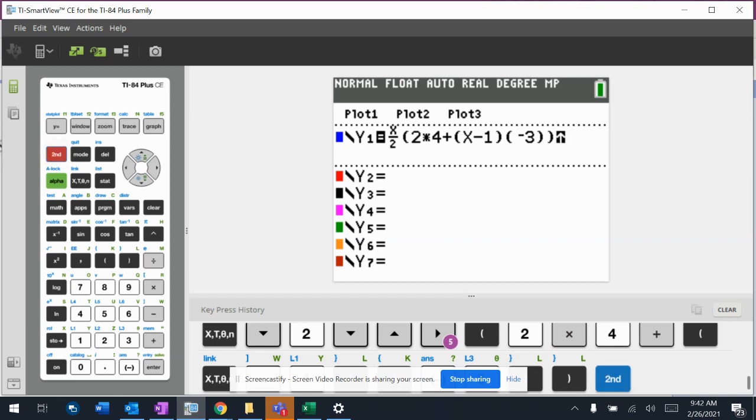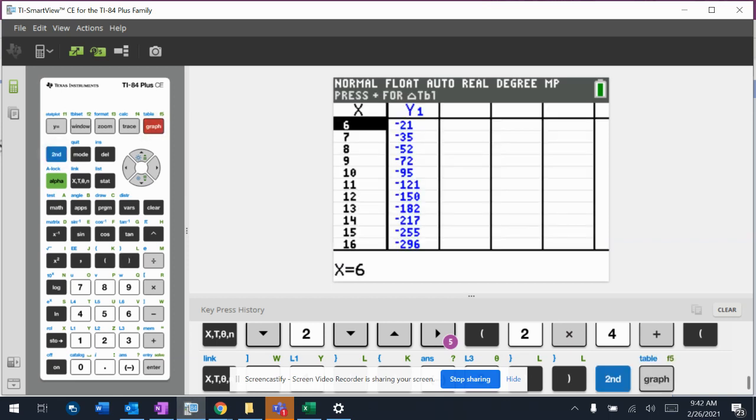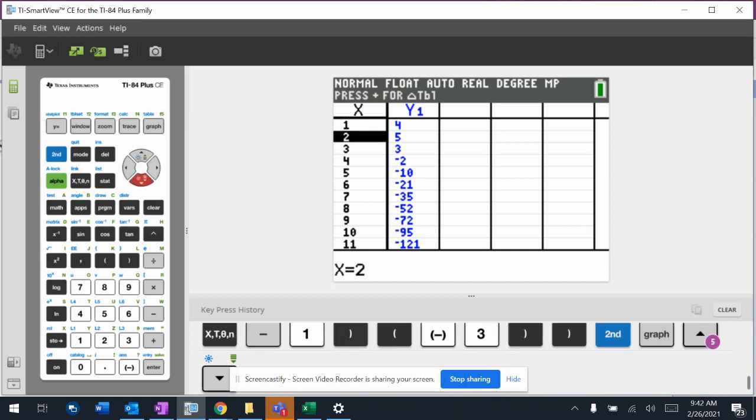So now what I'm going to do is I'm not going to graph it because I don't care what it looks like. It's not going to help me. I'm going to use the table, and so these x values are my n values, and then the y values are my sums. So if I had one term, the sum is 4, and then 5, and then these are the sums. So you can see that my 10th thing that I got right there, the sum is negative 95.